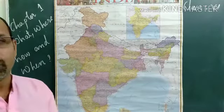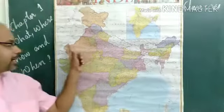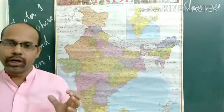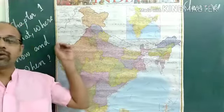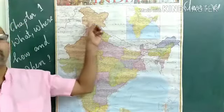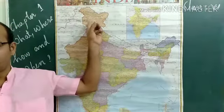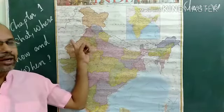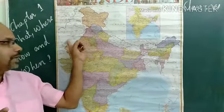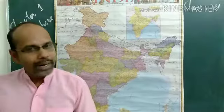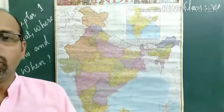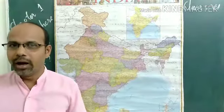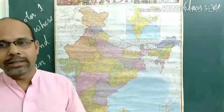The Indus river has five tributaries, mainly originating from Punjab. That is why Punjab is known as the land of five rivers. These five branches all merge together into a single river known as the Indus, which now flows through Pakistan.